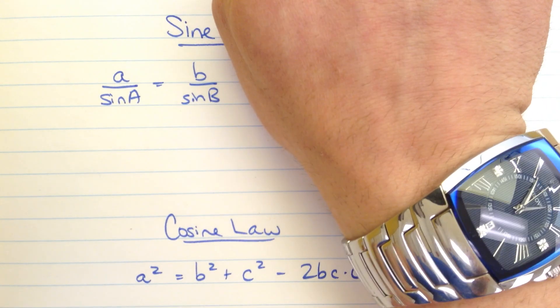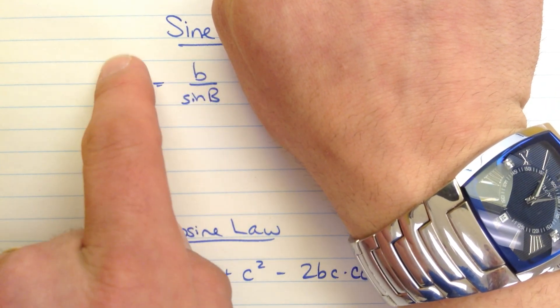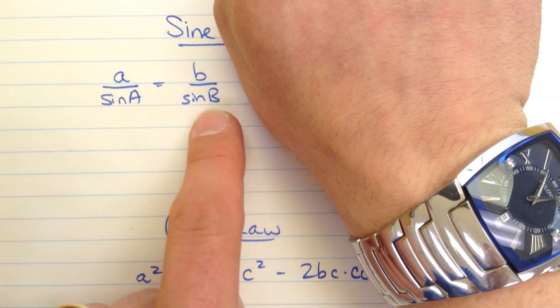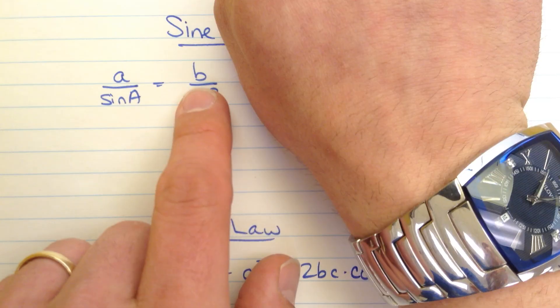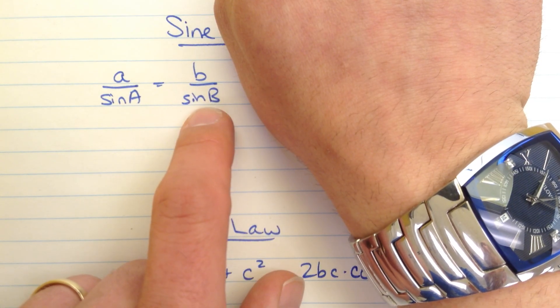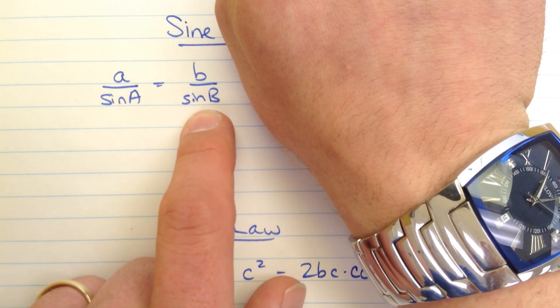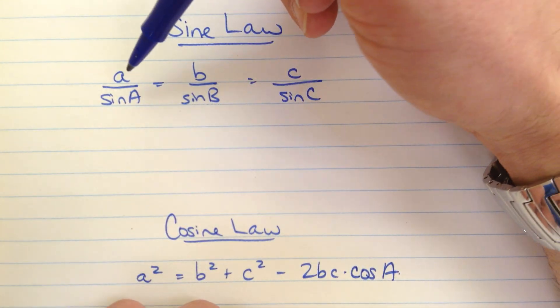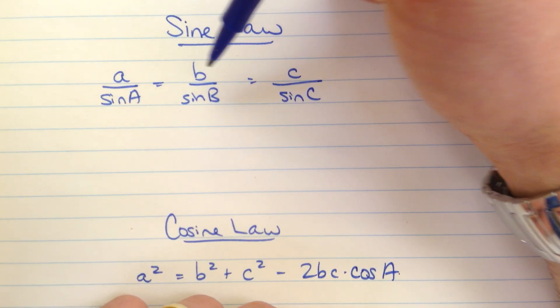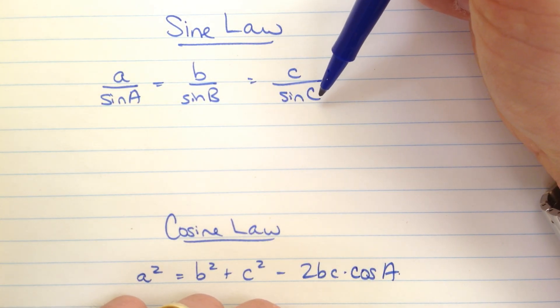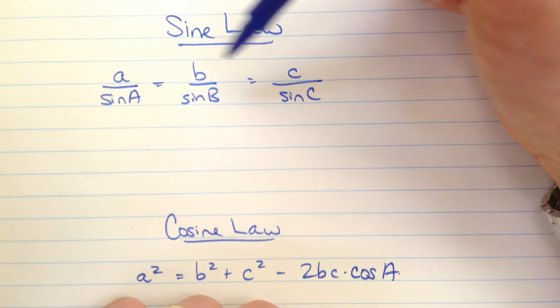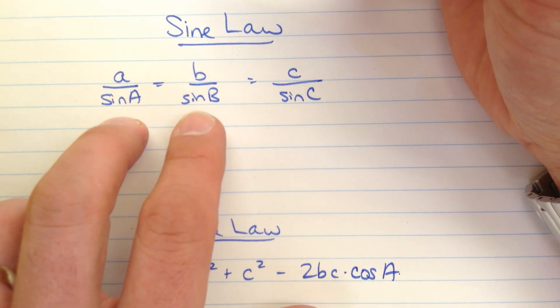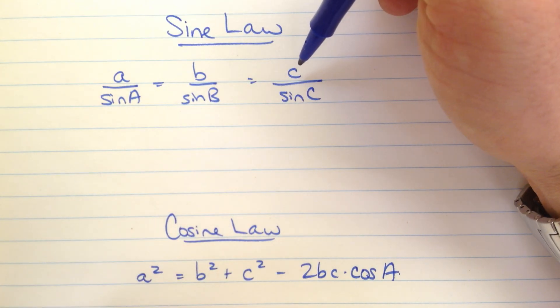So for example you might know little a, little b, capital A the angle but you don't know capital B, and so if you fill in the other three values you can solve for the remaining value. That's great as long as you know three pieces of information from any two of the ratios. But for example if you know A, B, and angle C that's not helpful because you have three separate parts. You would need to know at least one of these angles or you would need to know side C.